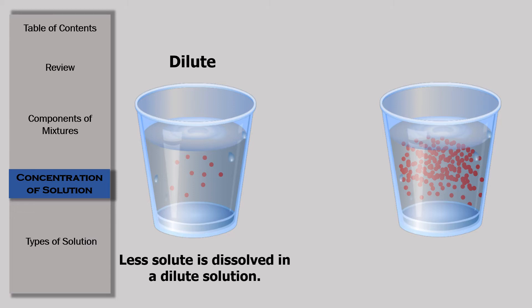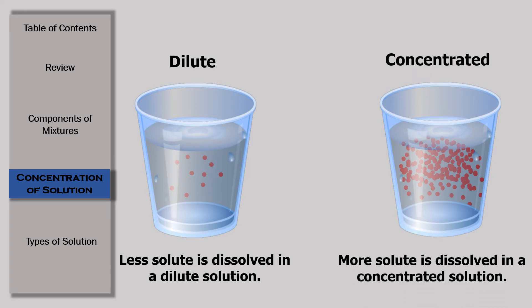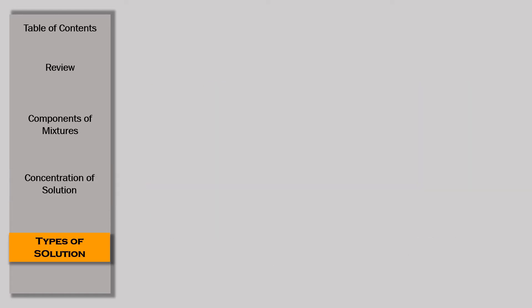Again, the red powder is our solute. That makes the second glass a concentrated solution because it contains more solute or more solute is dissolved in it. Let's proceed with the types of solution.